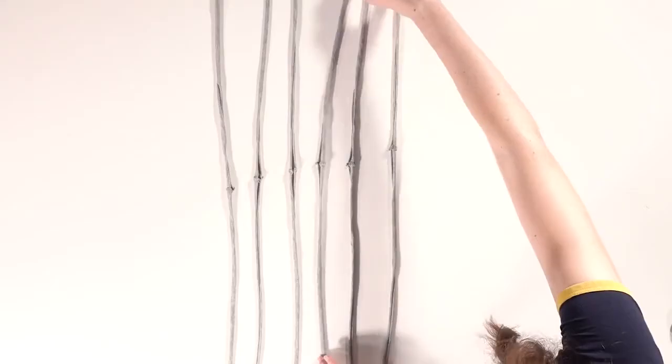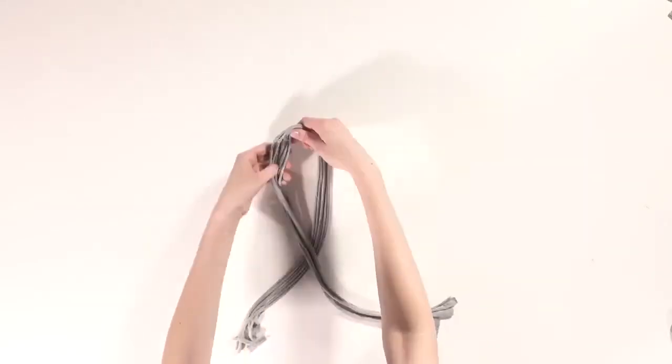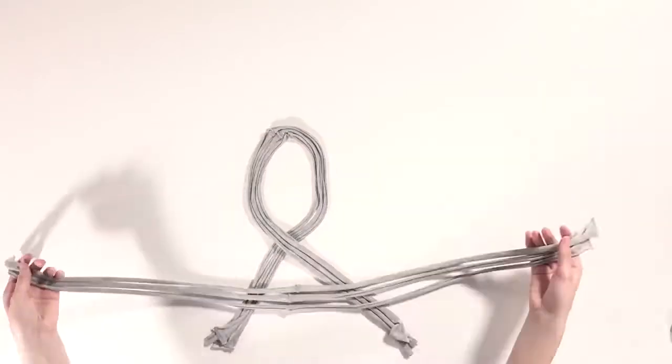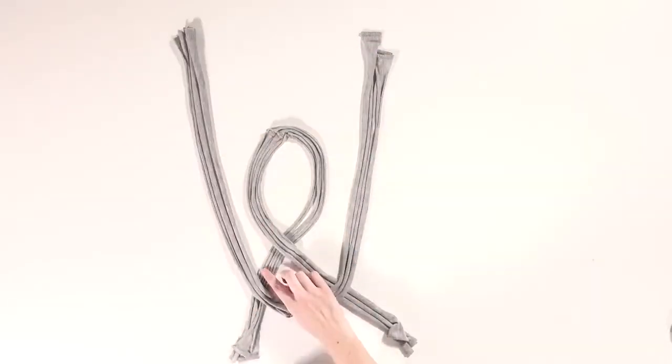Now, here's where this DIY gets a bit tricky. Separate three of the strips and lay them out in a loop like this. Then, take your other three strips and lay them in a U shape on top.